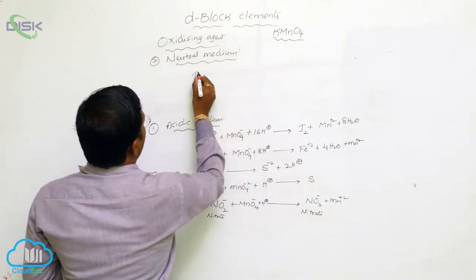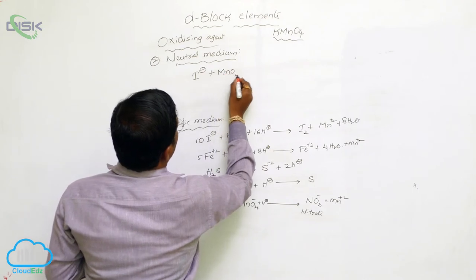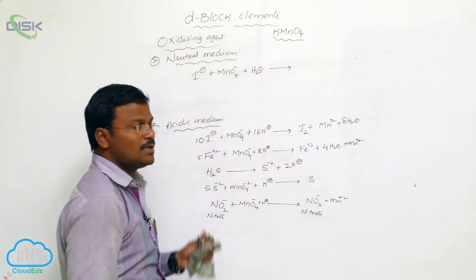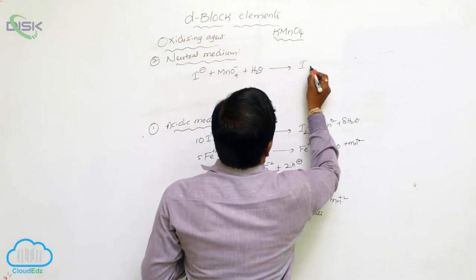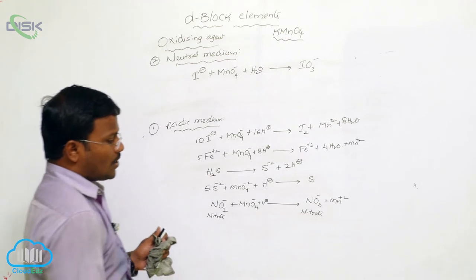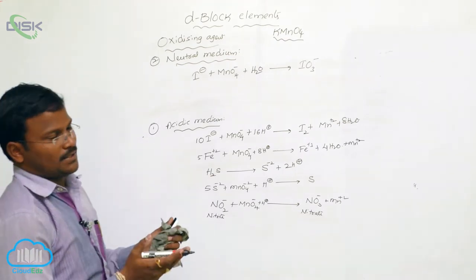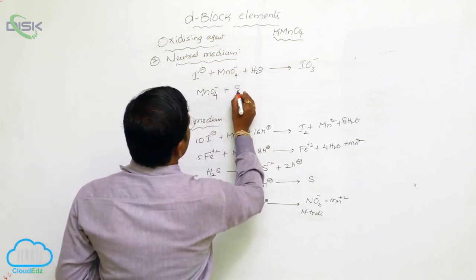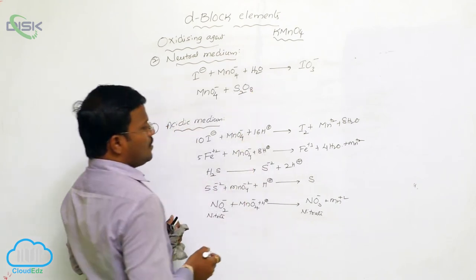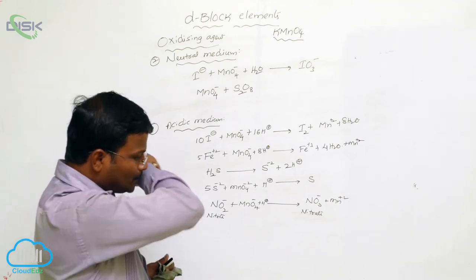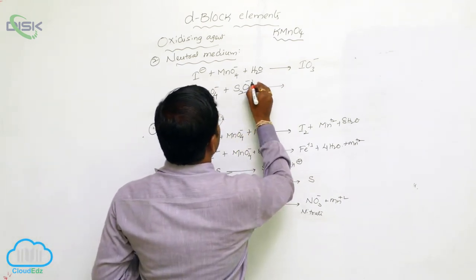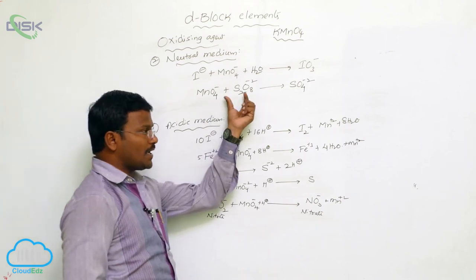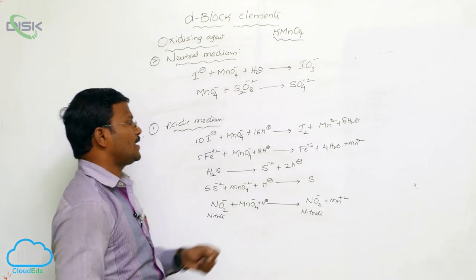In neutral medium, iodide ions when interacted with permanganate ions in aqueous solution where the pH is 7, are converted into IO₃⁻ — iodine is oxidized to iodate ions. Similarly, potassium permanganate is useful to oxidize thiosulfate or pyrosulfate into sulfate ions: S₂O₈²⁻ ions are oxidized to S₄O₄²⁻ ions, which are sulfate ions.